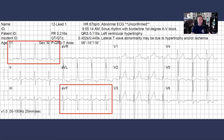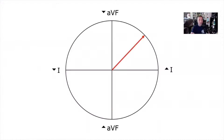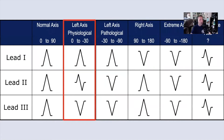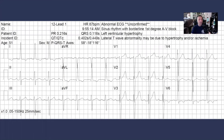We could have used the quadrant method using leads 1 and AVF — a positive QRS in lead 1 and a negative QRS in lead AVF puts us in the left superior quadrant. But we're unable to differentiate between physiologic and pathologic left axis deviation that way. The easiest thing is to look at the first three leads: we have a positive QRS in lead 1, a mostly equiphasic lead 2, and a negative QRS in lead 3, showing the QRS axis is somewhere zero to negative 30 — a physiologic left axis deviation.